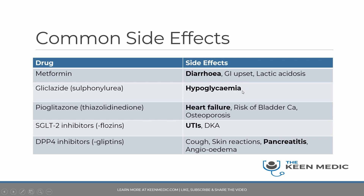For sulfonylureas, the single most important thing to remember is hypoglycemia. For thiazolidinediones (pioglitazone), there are three main things to be aware of, but the most important from a day-to-day point of view is heart failure — if elderly patients on these agents develop fluid overload or heart failure, you should stop the agent and switch to something different. There is also a long-term risk of bladder cancer and osteoporosis.